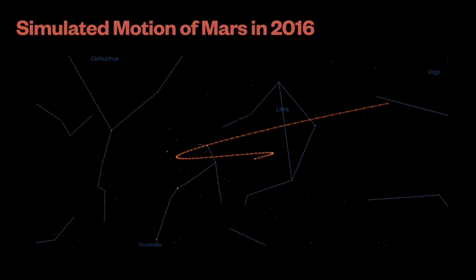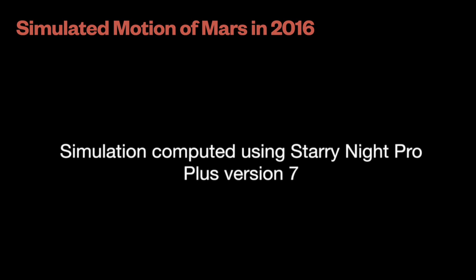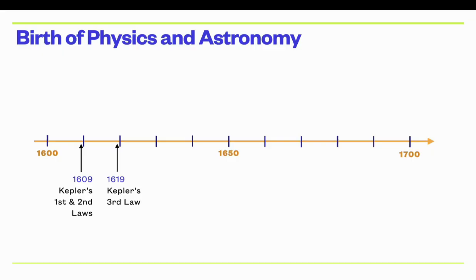Just from this data or these observations alone, it certainly isn't clear that Mars is in an elliptical orbit around the Sun. But by making very precise model calculations of different possible planetary orbits, Kepler showed that the only way of explaining that motion of Mars against the background stars was if it followed an elliptical orbit.